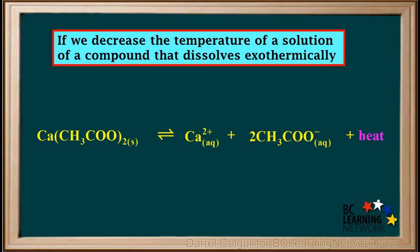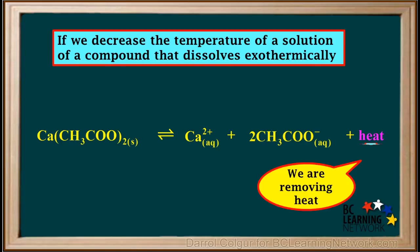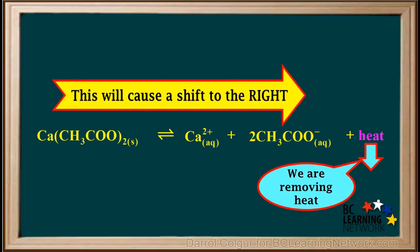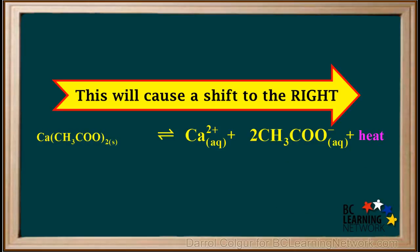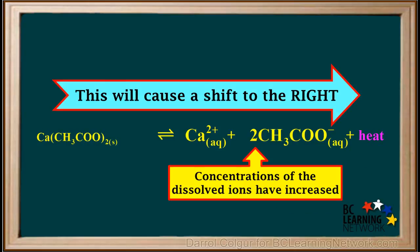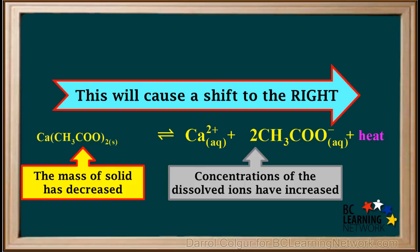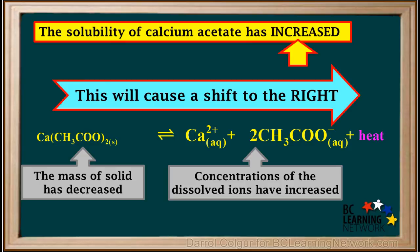Now, if we take a saturated solution of calcium acetate, a compound which dissolves exothermically, and we decrease the temperature, it means we are removing heat from the system. This will cause the equilibrium to shift to the right. As a result of shifting to the right, we can see that the concentrations of the dissolved ions have increased and the mass of the solid has decreased, so more of it has dissolved. Because there is less solid and more dissolved ions, the solubility of calcium acetate has increased.